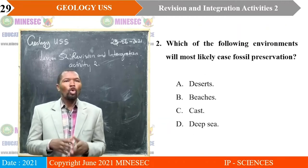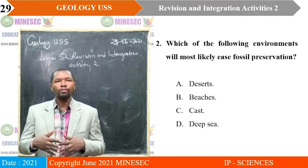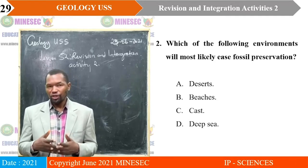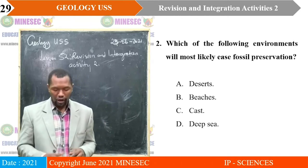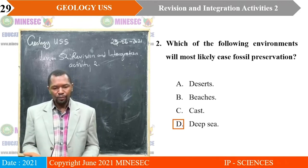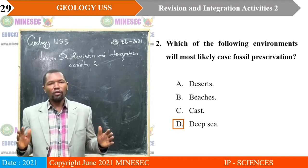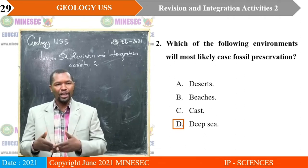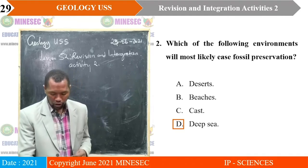Question two: which of the following environments will most likely ease fossil preservation? A. Deserts, B. Beaches, C. Caves, D. Deep sea. The correct answer is D, deep sea. Deep marine environments have deoxygenation, quietness, and no wave action, which permit better chances for preservation of organisms.